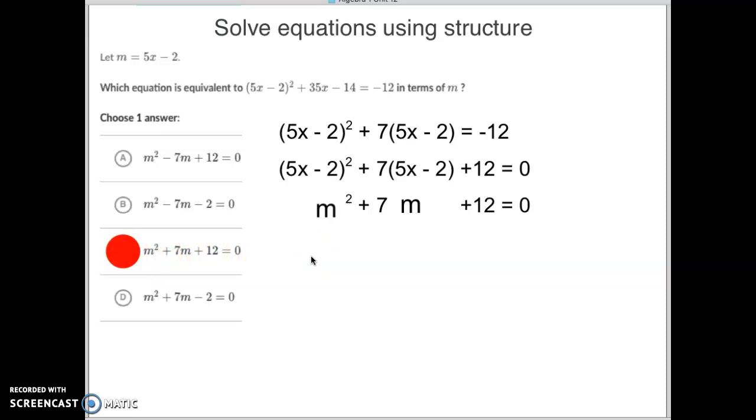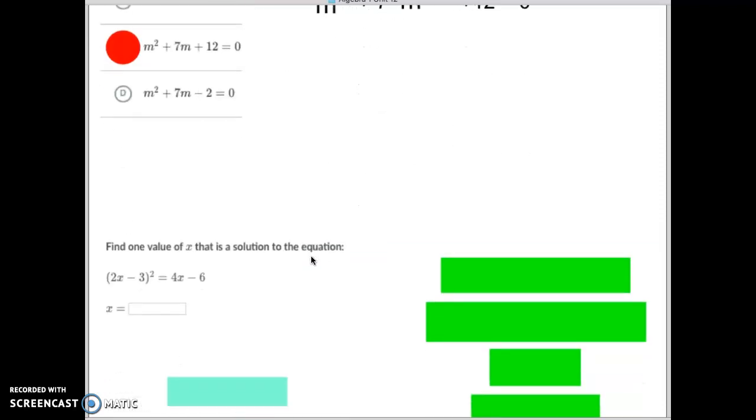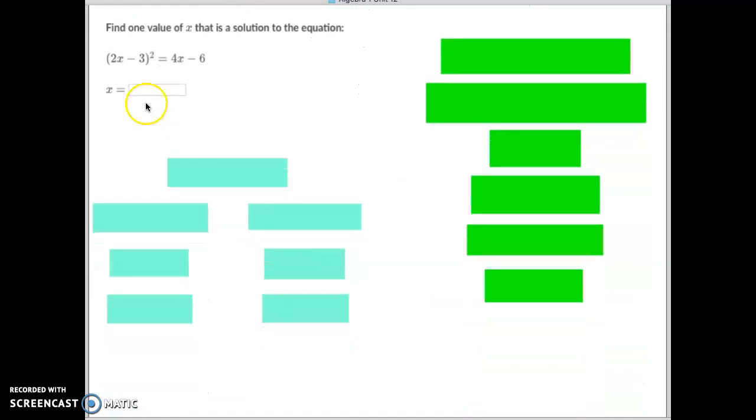All right, let's do another type that they do on this one to make sure you fully understand. On this one, we need to find one value of x that is a solution to this whole term right here. What I want you to notice on this one is you'll notice there's a 2x minus 3 here, and I want you to look closely here. Do you see the 2x minus 3 in that one right there?